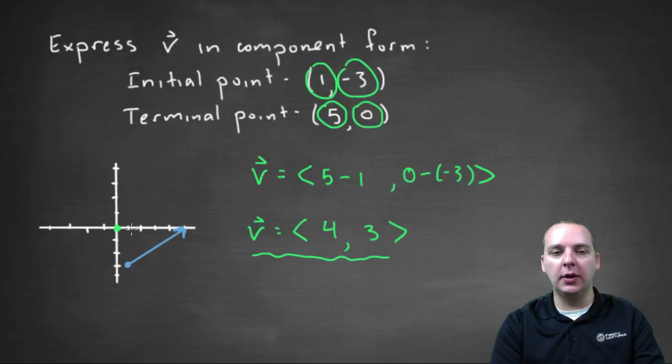So if I graph this real quick, go right one two three four, up one two three for the terminal point.